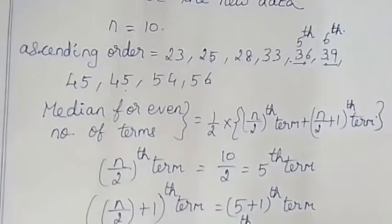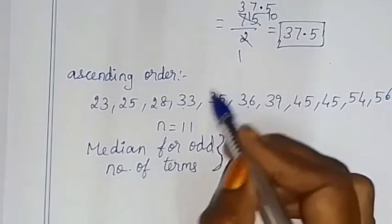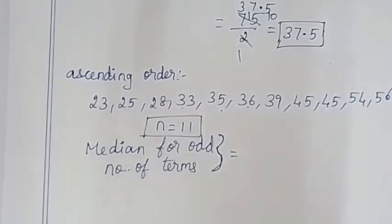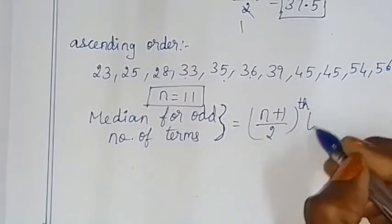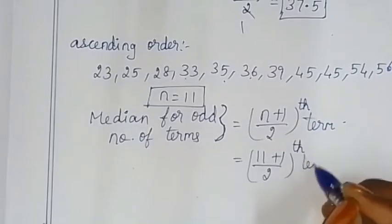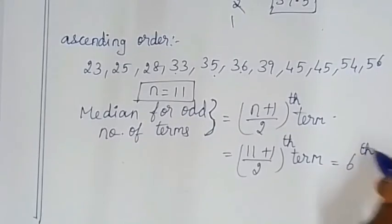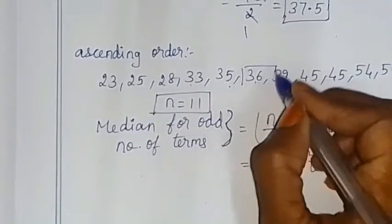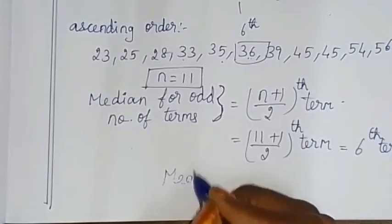The order is ready. With 11 terms, median for odd number of terms = (n+1)/2 th term = (11+1)/2 = 12/2 = 6th term. Counting 1, 2, 3, 4, 5, 6 — the 6th term is 36. So the median for the given data is 36.